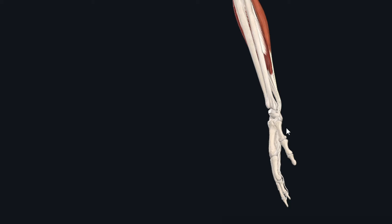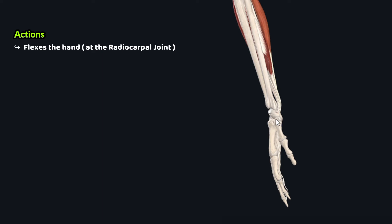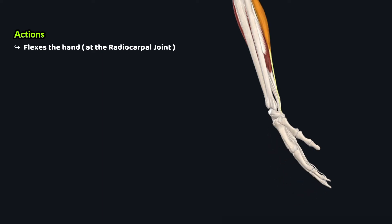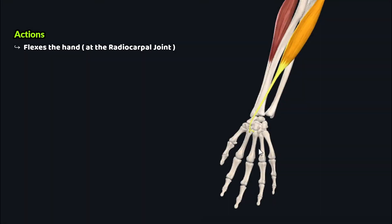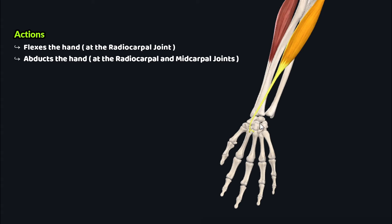If we study the actions of the flexor carpi radialis muscle, as its name suggests, this muscle is a flexor and it flexes the hand at the radiocarpal joint, also called the wrist joint. This muscle also abducts the hand at the radiocarpal and midcarpal joints.